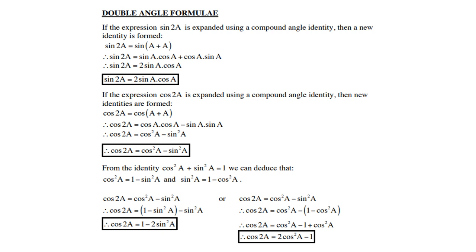The sine double angle rule is: sine of 2a equals 2 sine a cos a. For cos of 2a, expanded using a compound angle identity, 2a = a + a, so applying the cosine compound rule gives cos a cos a minus sine a sine a, which equals cos² a minus sin² a.